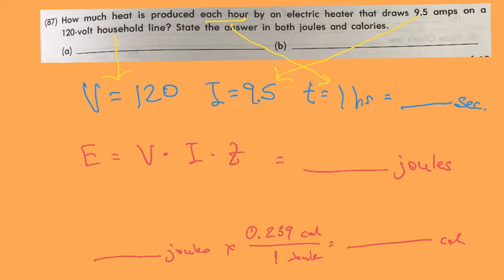It says, how much heat, that's energy, that's E, is produced each hour by an electric heater that draws 9.5 amps, hopefully you recognize by now that that is current, on a 120 volt, that would be the voltage or the EMF, state the answer in both joules and calories.